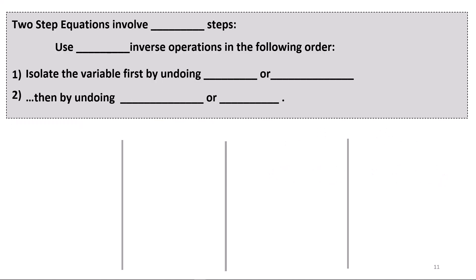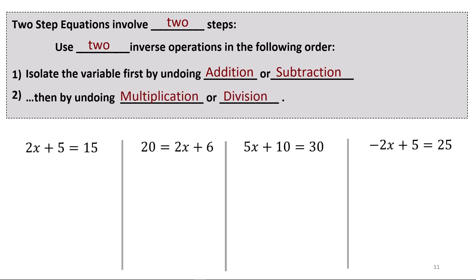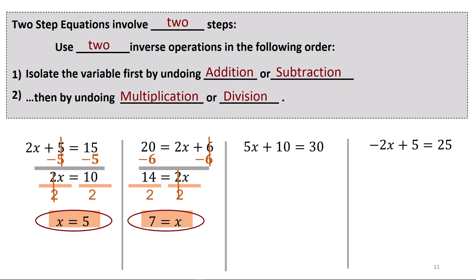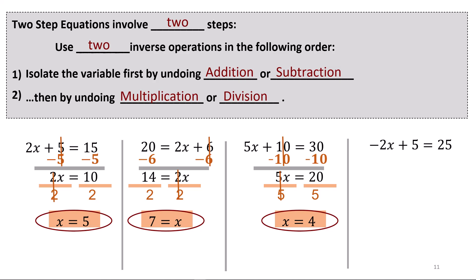Two-step equations involve two steps: use two inverse operations in this order — isolate the variable first by undoing addition or subtraction, then undo multiplication or division. For 2x plus 5 equals 15, subtract 5 from both sides leaving 2x equals 10, then divide by 2 giving x equals 5. In the second, undo plus 6 giving 14 equals 2x, then divide by 2 giving 7. In the third, subtract 10 leaving 5x equals 20, divide by 5 giving x equals 4. In the final, subtract 5 leaving negative 2x equals 20, then divide by negative 2 giving negative 10.